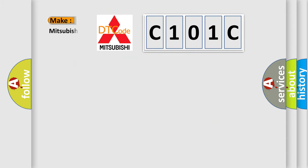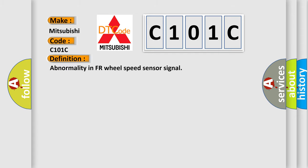So, what does the Diagnostic Trouble Code interpret specifically for Mitsubishi car manufacturers? The basic definition is: Abnormality in FR wheel speed sensor signal.